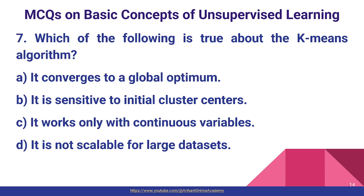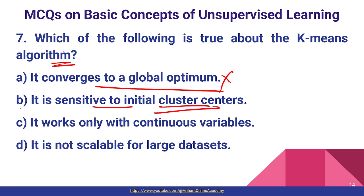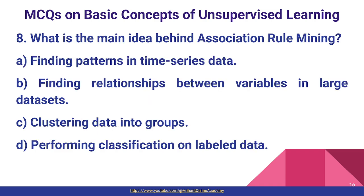Question number seven: which of the following is true about the k-means algorithm? Option: converges to a global optimum — no. Option B: it is sensitive to initial cluster centers — yes, this is correct. In k-means clustering, we have to choose the initial centroids based on our best knowledge, so it is sensitive to the initial cluster center that we manually choose. Option B is correct.